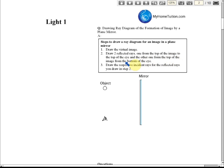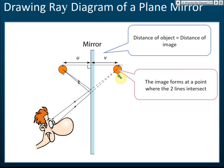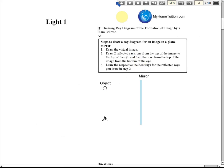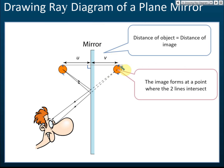Draw two reflected rays: one from the chosen point on the image to the top of the eye, and another from the same point to the bottom of the eye. The lines behind the mirror are reference lines — there is no actual light there, since light hits the mirror and reflects. So we use a dotted line behind the mirror and a solid line from the mirror to the eye.